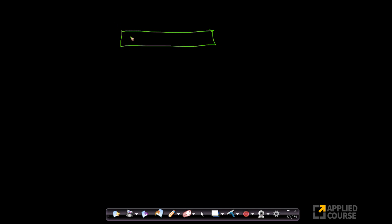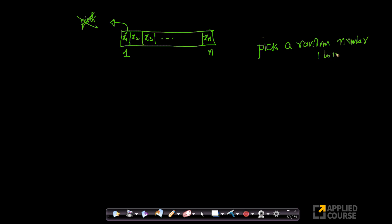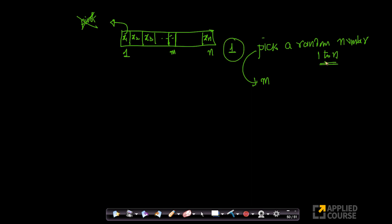Imagine if I have this array: my first element is x1, second element is x2, third element is x3, and so on up to xn. In the regular case, x1 is what I would always pick as pivot. In this case, I will not do it. I have elements 1 to n, so I will pick a random number in the range of 1 to n. Let's assume I got a value m, where m lies between 1 and n.